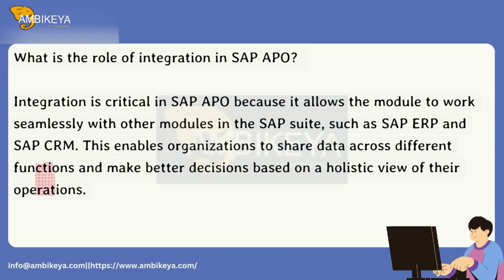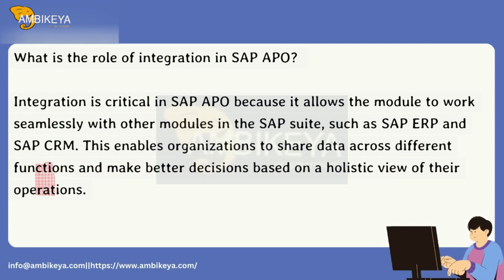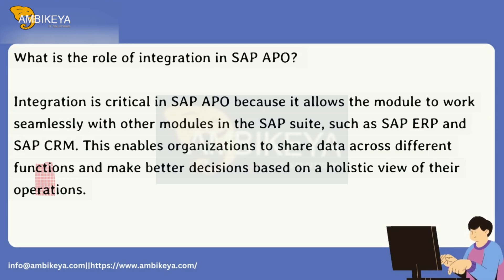What is the role of integration in SAP APO? Integration is critical in SAP APO because it allows the module to work seamlessly with other modules in the SAP suite, such as SAP ERP and SAP CRM. This enables organizations to share data across different functions and make better decisions based on a holistic view of their operations.